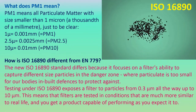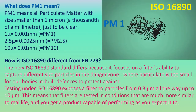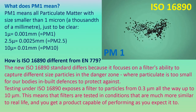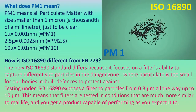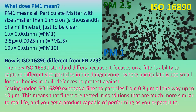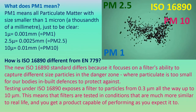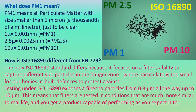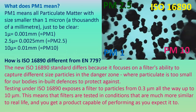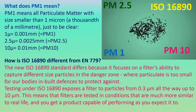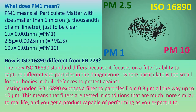What does PM1 mean? PM1 means all particulate matter with size smaller than 1 micron, which is a thousandth of a millimeter. To be clear: 1 micron equals 0.001 millimeters equals PM1. 2.5 micron equals 0.0025 millimeters equals PM2.5. 10 micron equals 0.01 millimeters equals PM10.